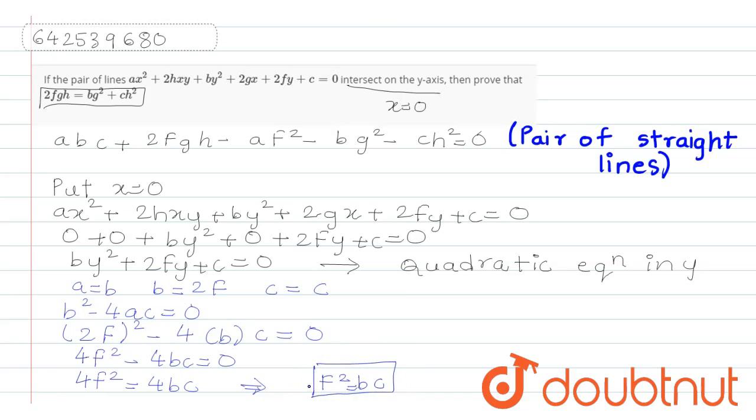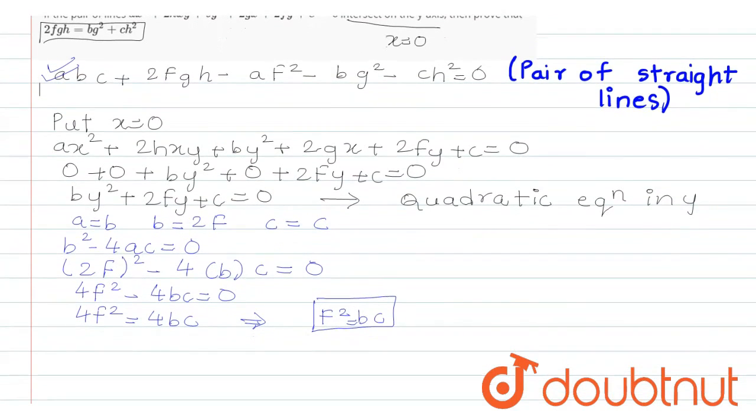We have derived this. Now, what are we going to do in the above equation, the pair of straight lines? We are going to put the value of F square equals BC. Let's quickly put the value of F square equals BC. The equation becomes ABC plus 2FGH minus A. Instead of F square, we will write BC minus BG square minus CH square equals 0.